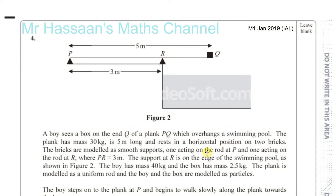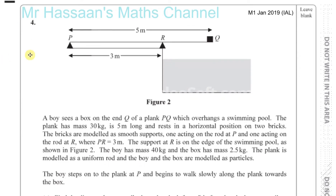Now for question number 4 from M1 2019 January, International A Level. Here we have a question about moments. We have a boy who sees a box on the end Q of a plank PQ, which overhangs a swimming pool. The plank has a mass of 30 kilograms, is 5 meters long, and rests in a horizontal position on two bricks. The bricks are modeled as smooth supports, one acting on the rod at P and one acting on the rod at R, where PR is 3 meters.